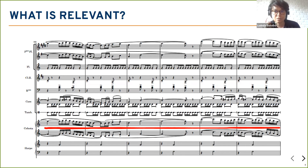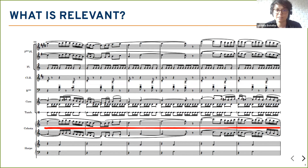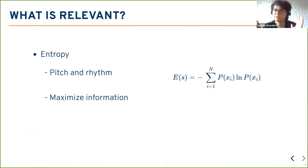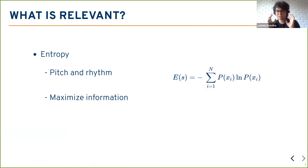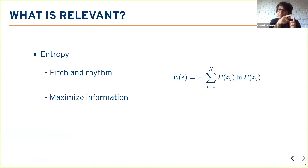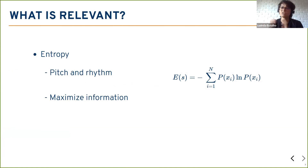This looks more informationally rich. Which leads us to ask: how can we measure how much information a phrase contains? Basically: information entropy — channel entropy. We identify pitch entropy and rhythm entropy. Pitch refers to the frequencies of the notes. Rhythm is defined by the duration and pauses between the notes, giving us our sense of rhythm. This can be quantified.